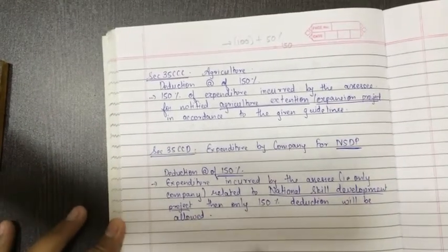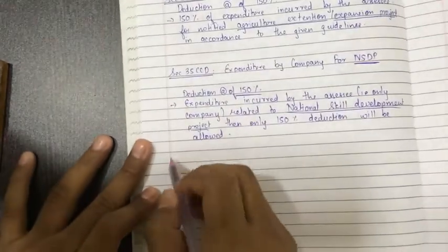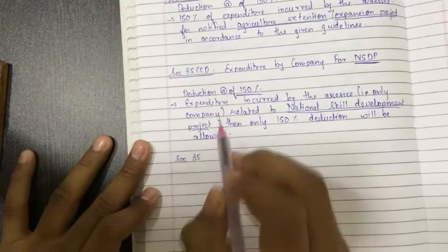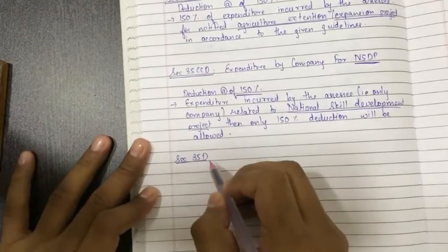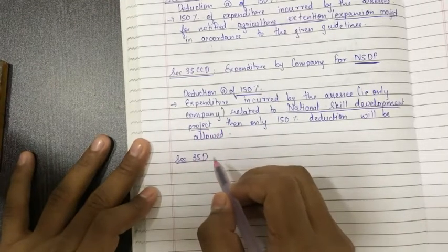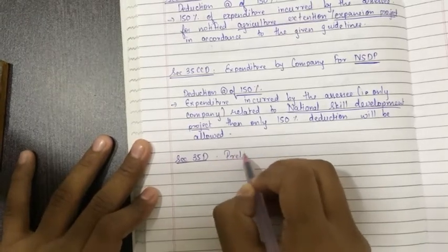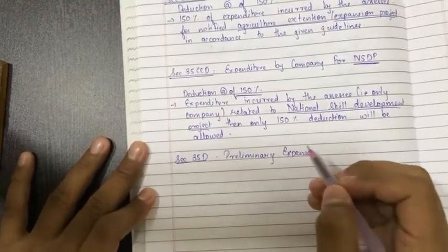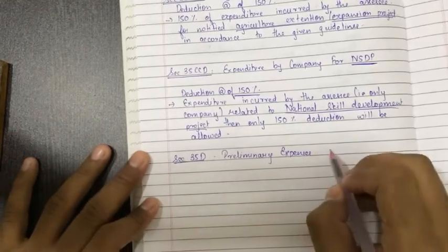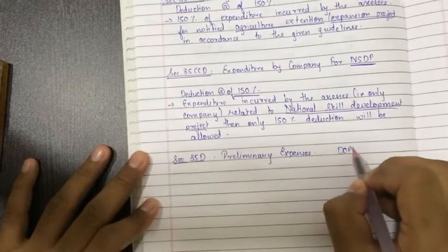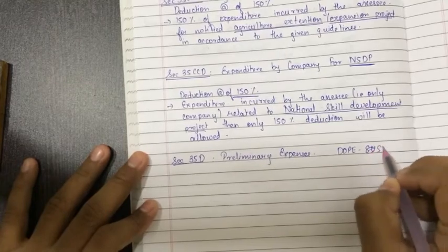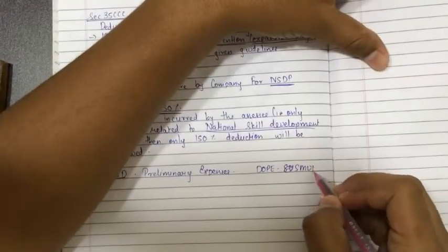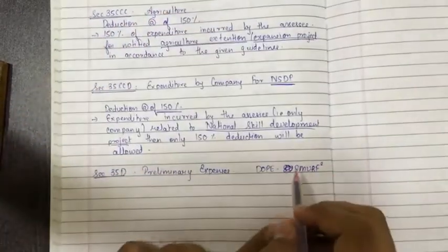Now let's move on to Section 35D. Here you might get a little help. Section 35D is related to preliminary expenses. Which preliminary expenses? See, DOPE SMURF - wait, sorry. DOPE SMURF. I hope this is visible to y'all. See which all expenses are allowed.